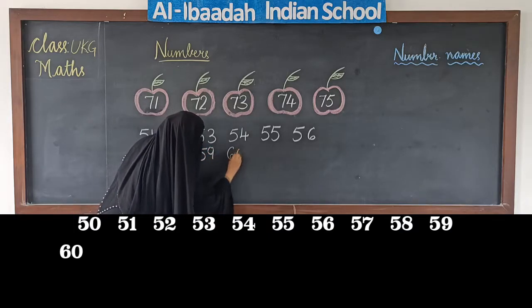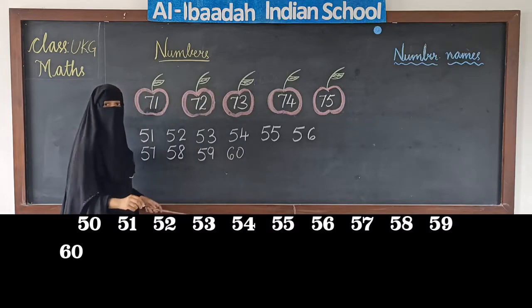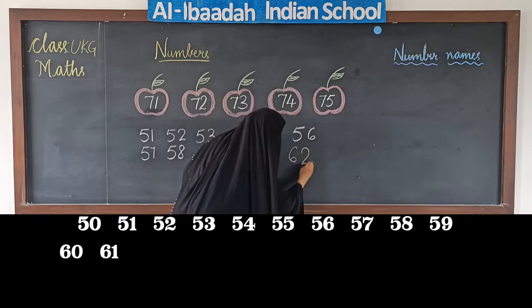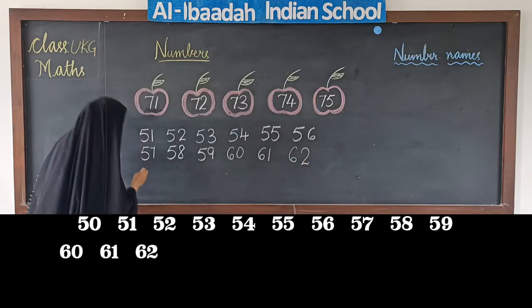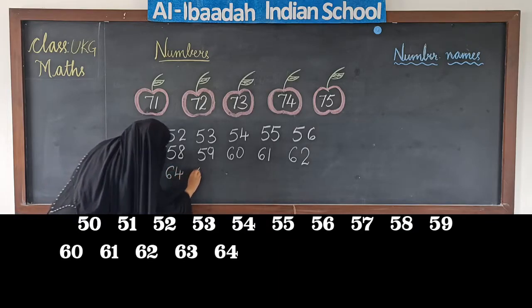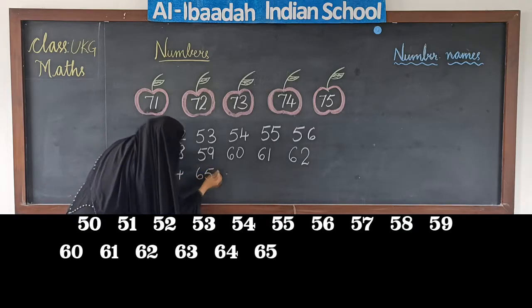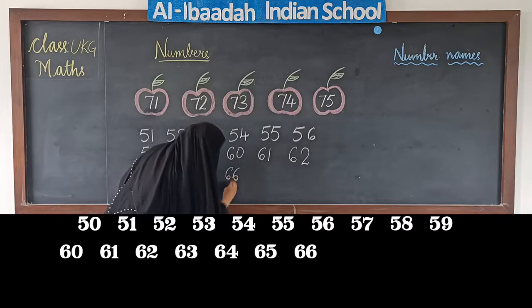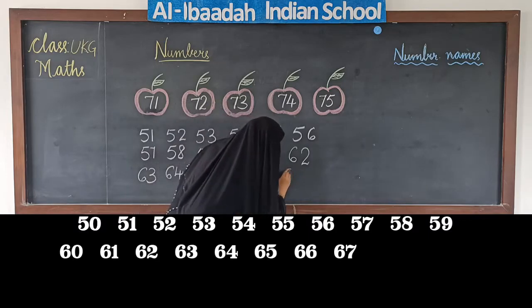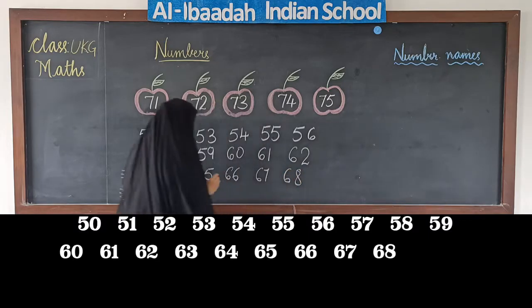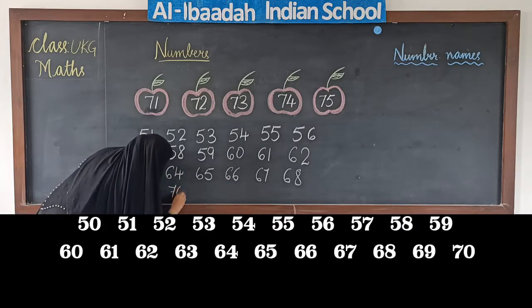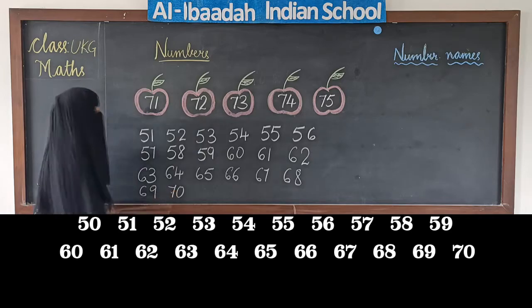59, 60. After 60: 61, 62, 63, 64, 65, 66, 67, 68, 69, 70.